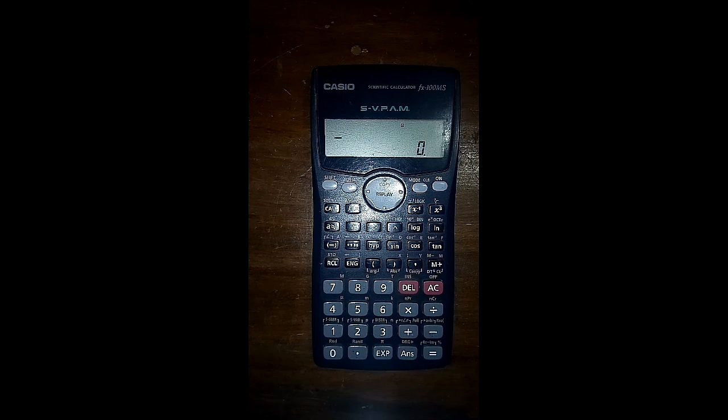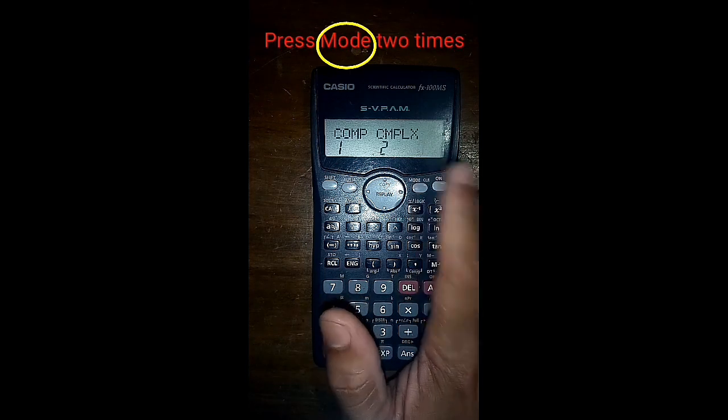To find the normal table in R, we have to change the mode first. Press the mode twice.